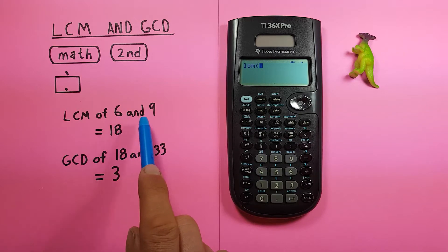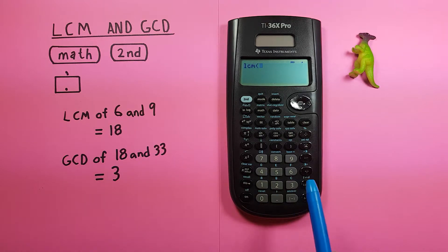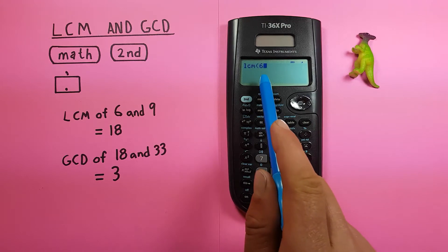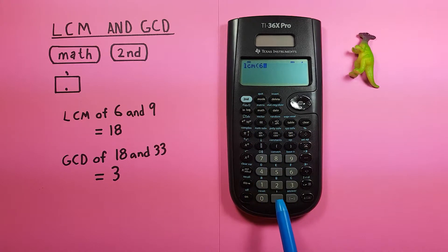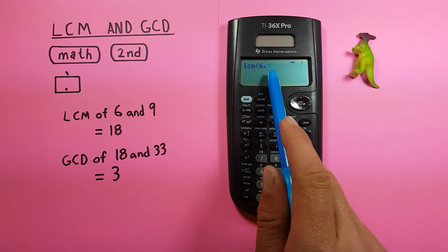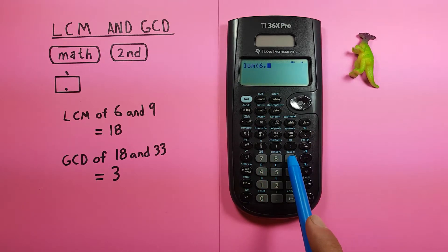Now we enter the numbers that we want to use to find our answer. Our first one is six and then we need to put a comma in here. To do that we go second period and there's our comma and then our next number is nine.